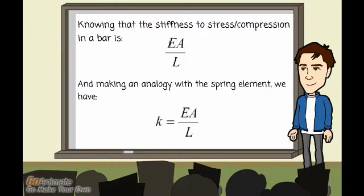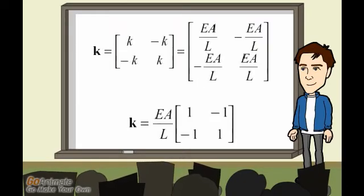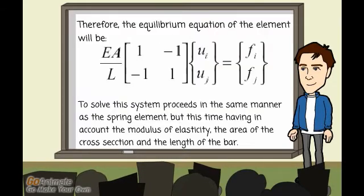Knowing that the stiffness to stress/compression in a bar is EA/L. And making an analogy with the spring element, we have k = EA/L. To solve the system proceeds in the same manner as the spring element, but this time having in account the modulus of elasticity, the area of the cross section, and the bar length.